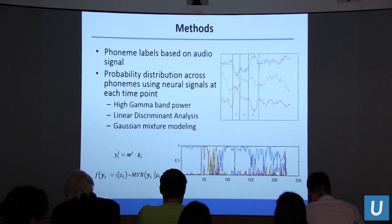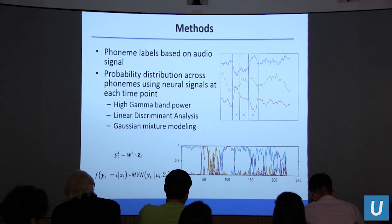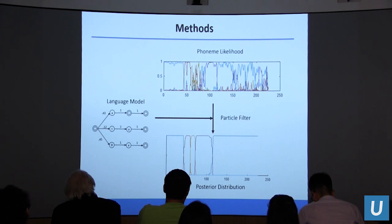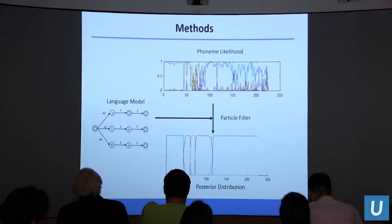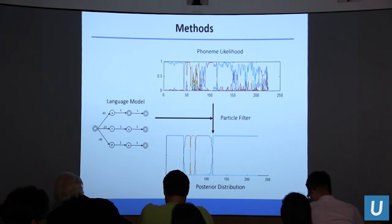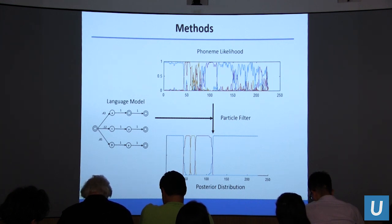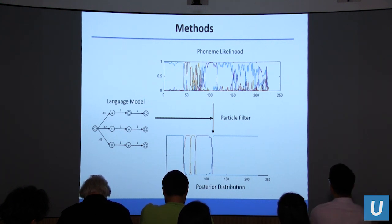In the first pass, every time point is completely independent and we have a sequence of probability distributions over the set of phonemes. We then created a model of spoken language based on a corpus of natural language text, combined with a dictionary of phonemes from Carnegie Mellon. Using this language model, we incorporate it into a process model such as a hidden Markov model, or in this case a particle filter, to smooth out the probability distributions and create a more continuous representation of their speech based on the signals and the model.